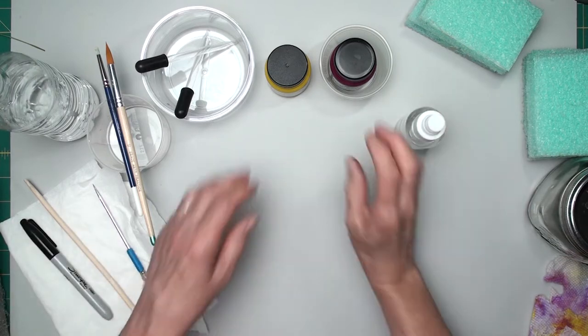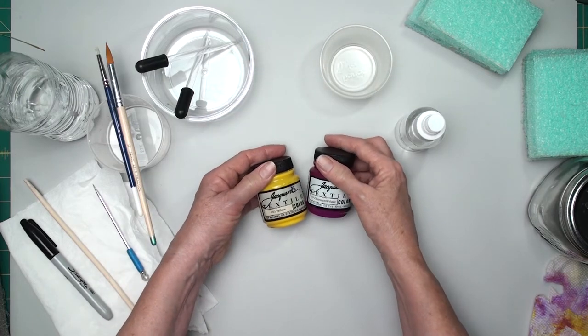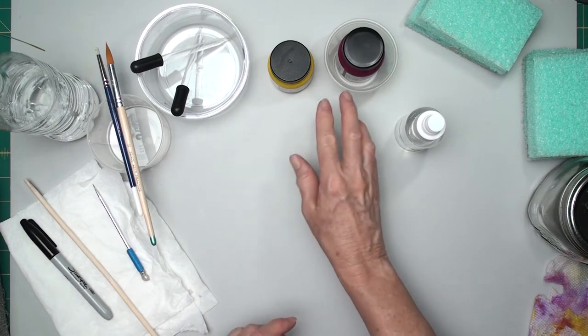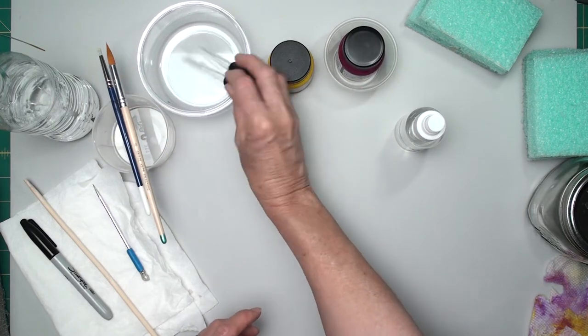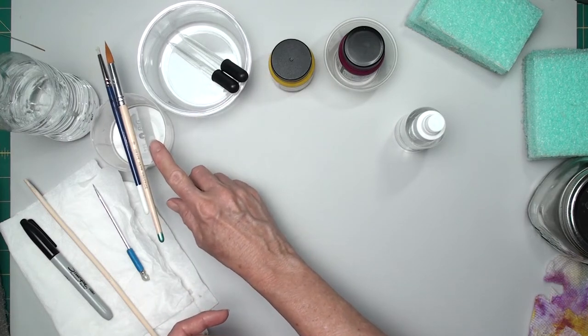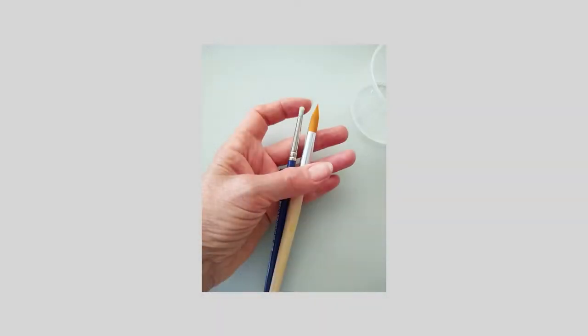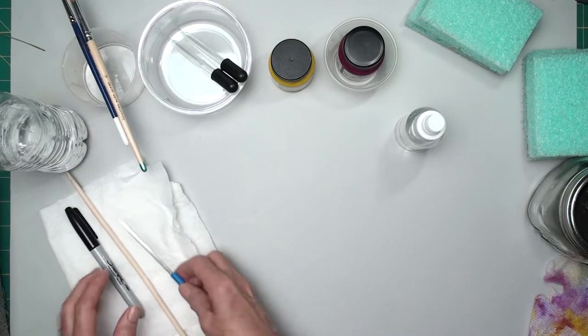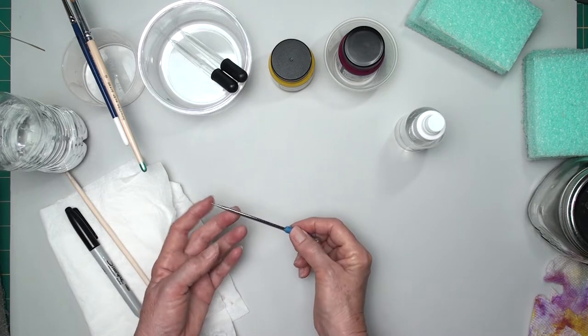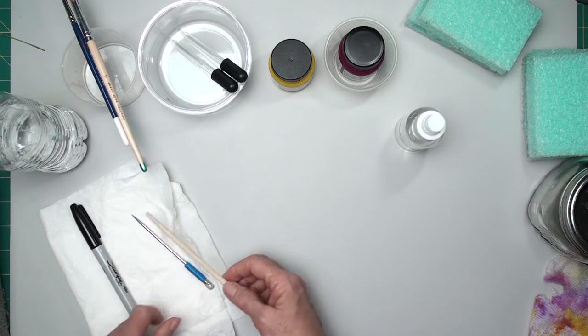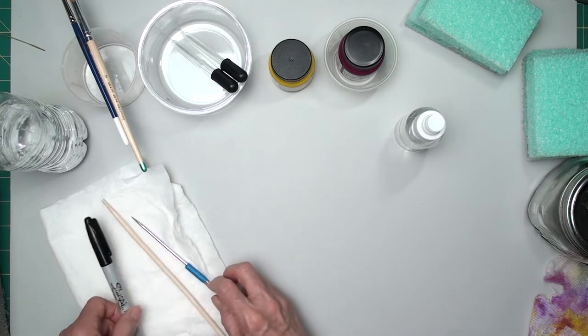I have a mist bottle. I'm using Jacquard textile color in yellow and fluorescent violet. I also want some containers in case you want to mix your colors or thin them. I have eyedroppers, a container to hold water, a container to rest my brushes in as I work so they don't dry out. I'm using a small stiff brush and a round pointed brush. I have some wipes or paper towels, something sharp like scissors or a stiletto tool, and then a chopstick or something that will make a larger hole. A marker, which is optional.